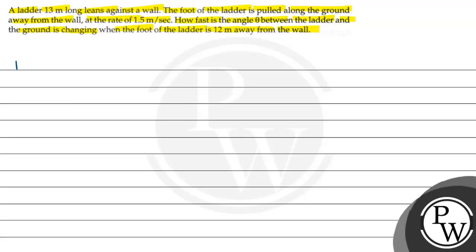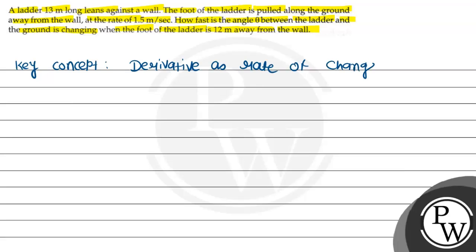The key concept of this question is derivative as the rate of change. According to the given data, let's first draw the figure. There is one ladder which is leaning against the wall, so let's consider the wall.